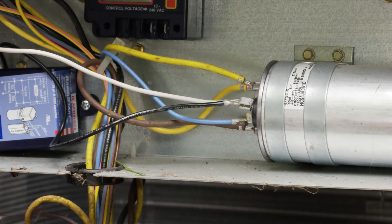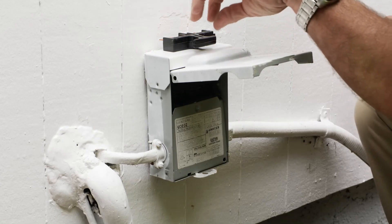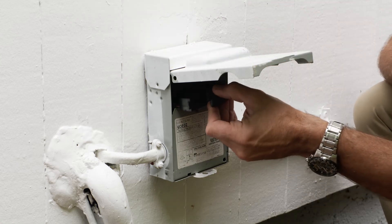And that is all there is to installing the ICM 866U. Now that we're all done with the installation of our hard start, we're going to want to put the disconnect back in, test the air conditioner out.